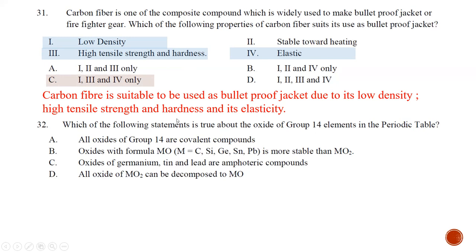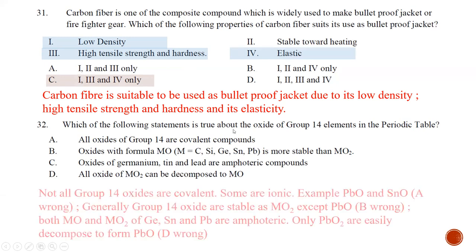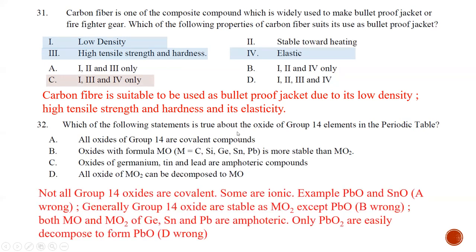Question number thirty-two: which statement is true about the oxides of Group 14 elements? Statement A — all Group 14 oxides are covalent — is wrong; some are ionic. Statement B — oxides of formula MO are more stable than MO2 — is only true for lead. Statement C — oxides of germanium, tin, and lead are amphoteric — is correct. Statement D — all MO2 oxides can be decomposed to MO — is incorrect. The best answer is C.